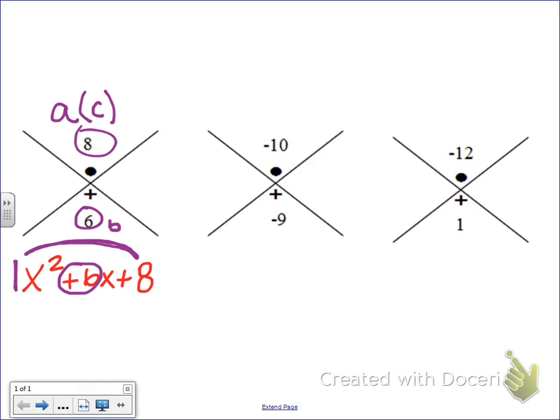Here's how the x-factor chart works. I need to find two numbers that multiply to give me positive 8 and add to give me 6. So where you start is by finding the factors of 8.